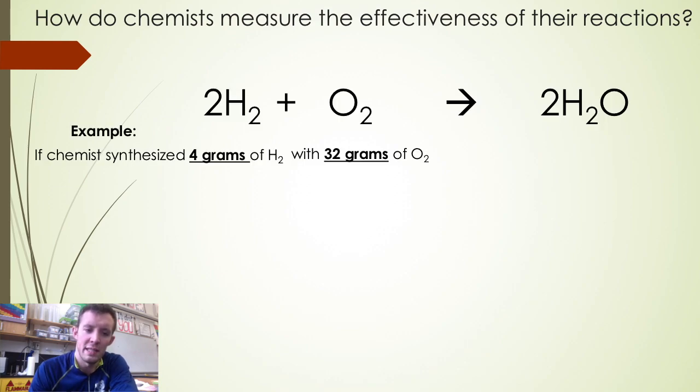So for instance, if a chemist were to do a synthesis reaction of 4 grams of hydrogen with 32 grams of oxygen, she would expect to create 36 grams of water.